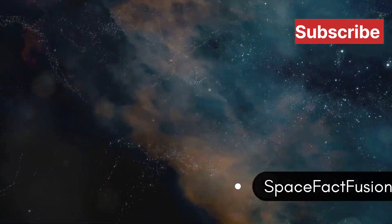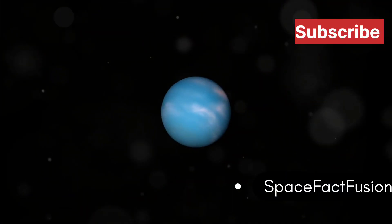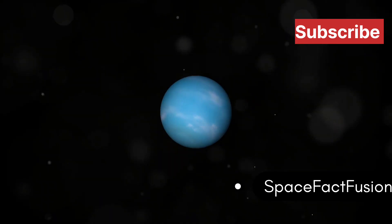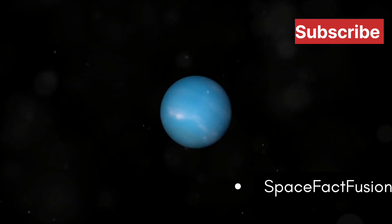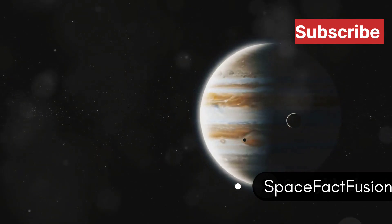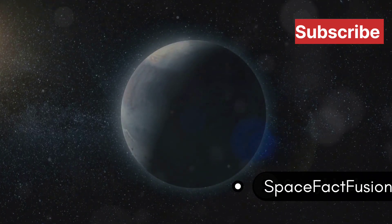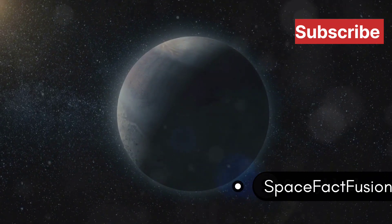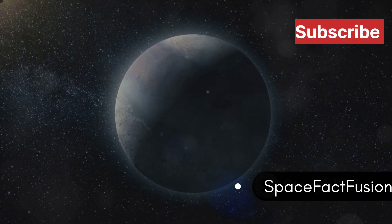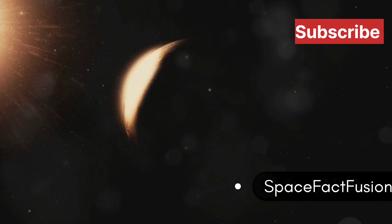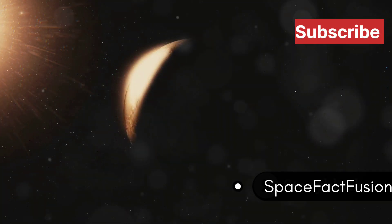Get ready for a cosmic road trip as we chase after HD 106906b, a planet that's gone rogue. This massive world, about 11 times the mass of Jupiter, is a true loner. HD 106906b is incredibly far from its host star—650 times the distance between Earth and the sun. It takes this rogue planet 1,100 years to complete one orbit.